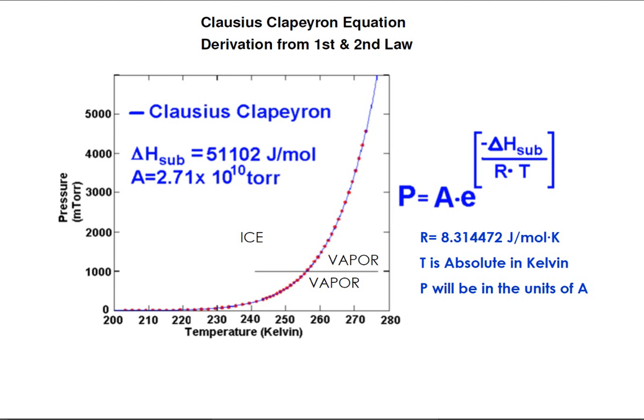The curve represents the temperature and pressure at which the two phases, ice and vapor, are in equilibrium.